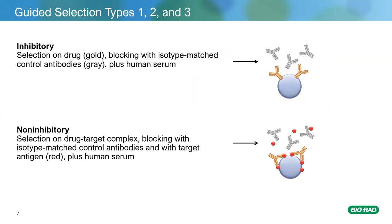To generate these different anti-idiotype classes, we use inhibitory and non-inhibitory selection strategies. For inhibitory selection, we immobilize the drug on a solid surface like a bead and block with an isotype control — either germline-matched or same immunoglobulin subclass as the drug — and human serum at five or ten percent. This blocks antibodies recognizing common features like the Fc, and enriches for antibodies recognizing unique features like the paratope. This is how we generate type 1 anti-idiotypes, with a very high success rate.